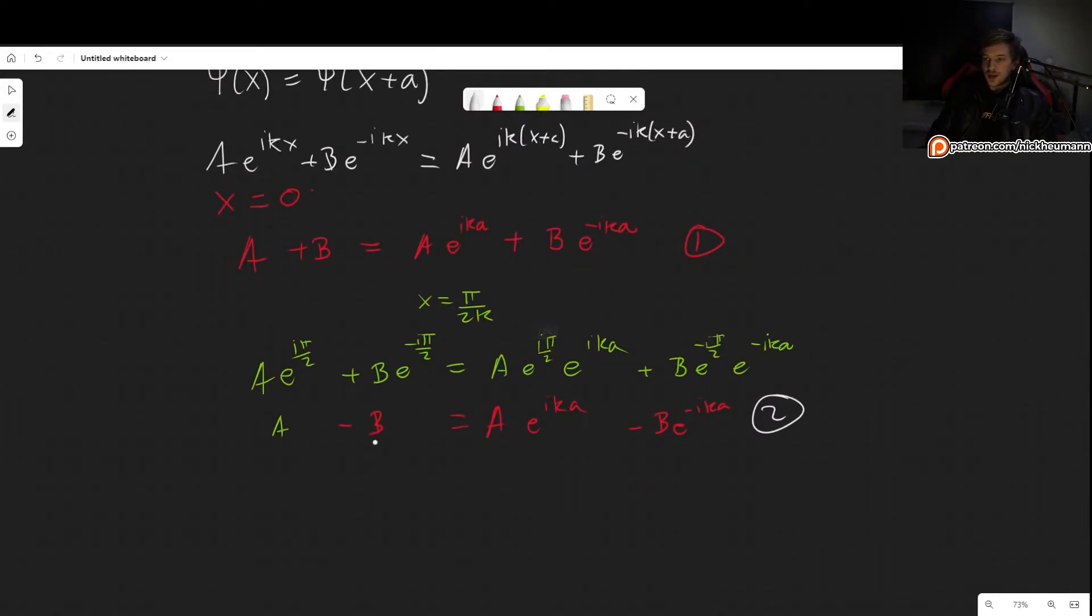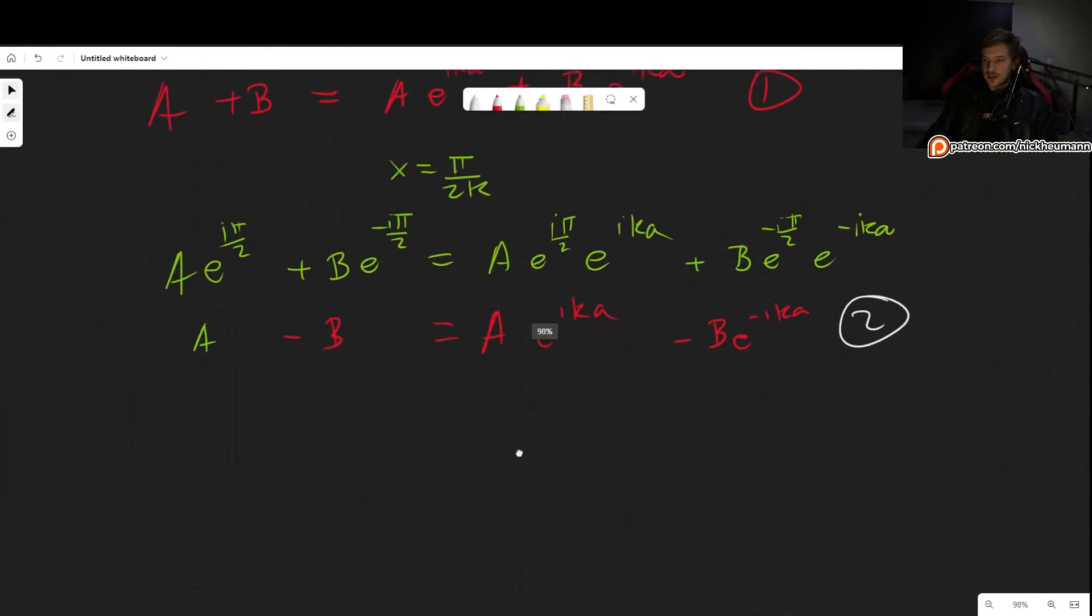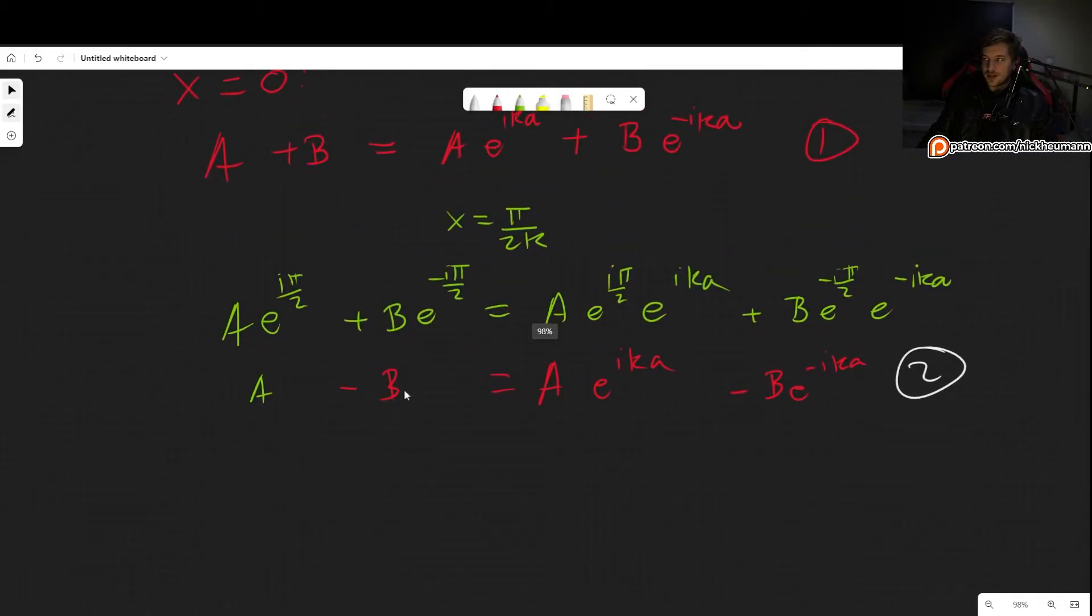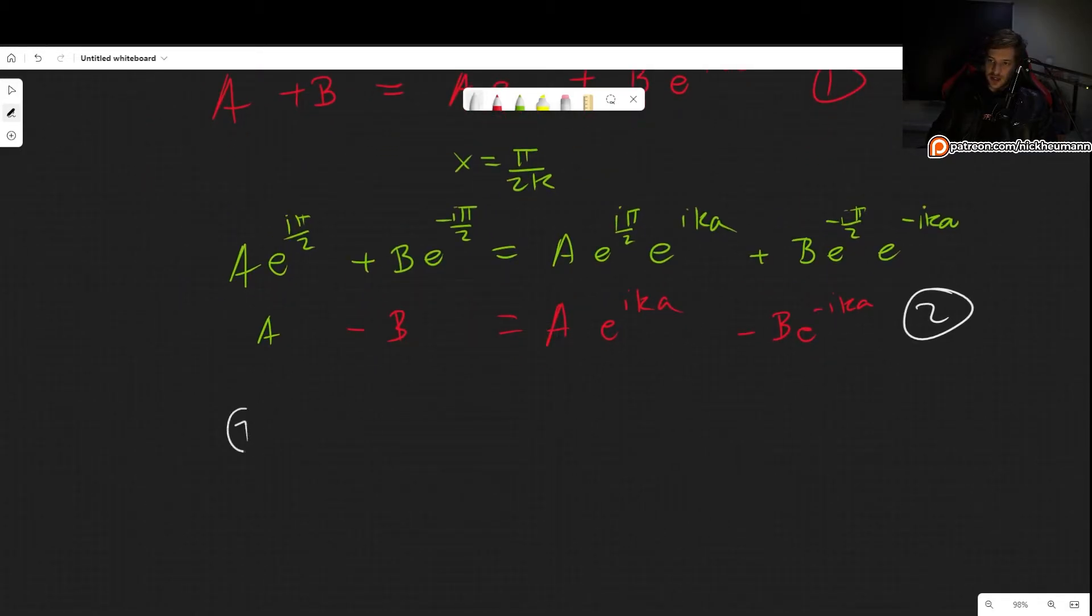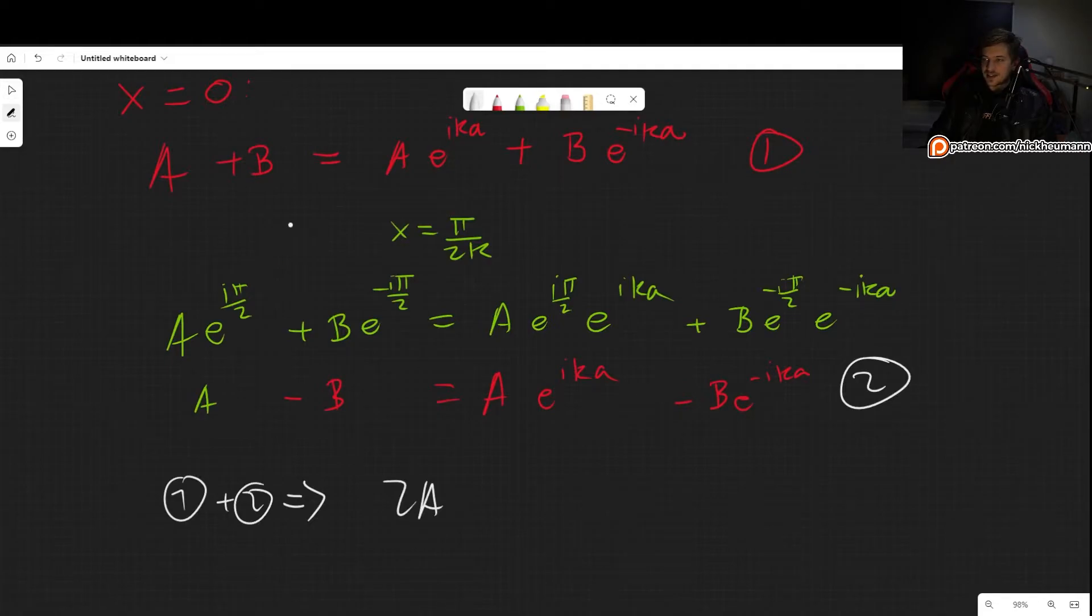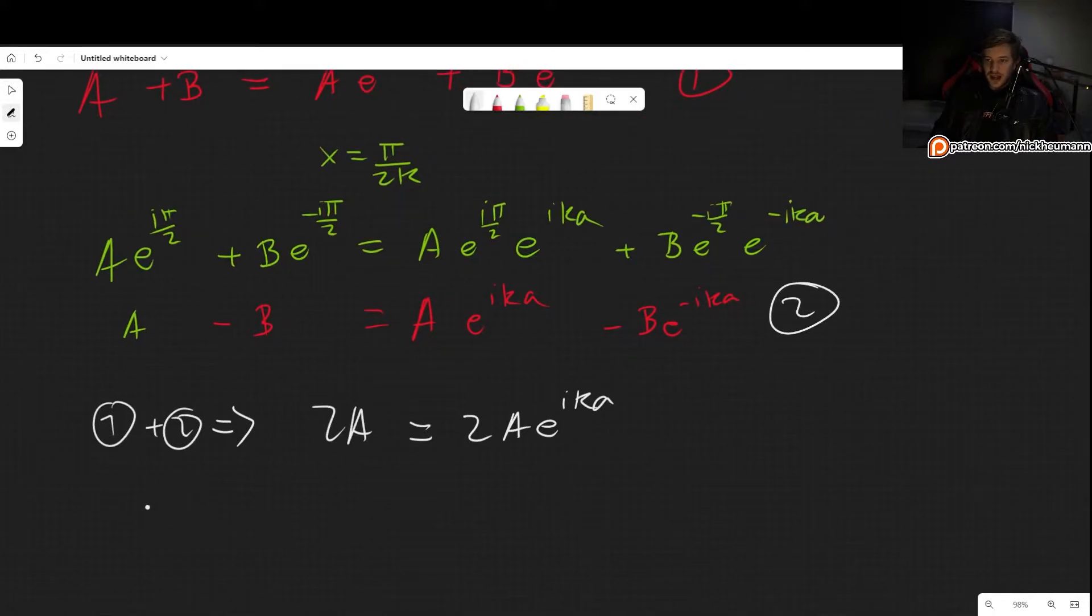Now we can get rid of either A or B. For example, we can get rid of B if we simply add these two equations together. So we can do 1 plus 2, and we get 2A. The B's cancel out on the left-hand side and on the right-hand side. So we get 2A equals 2Ae^(ika).